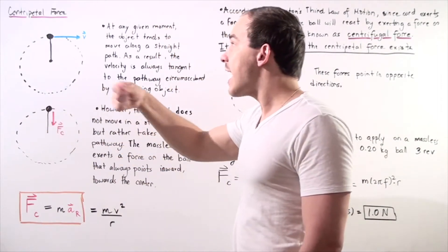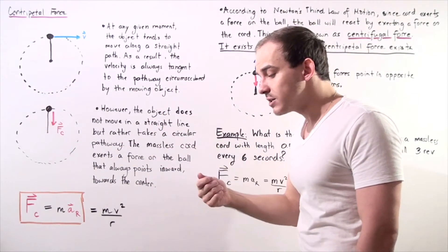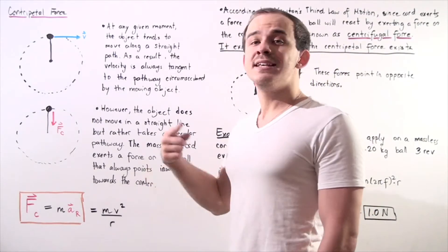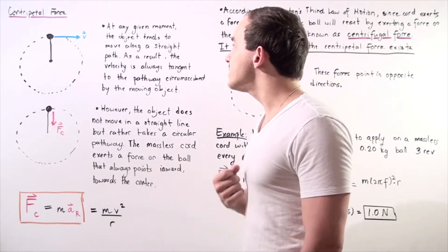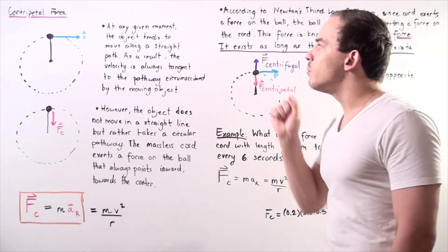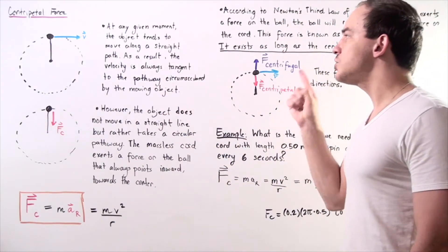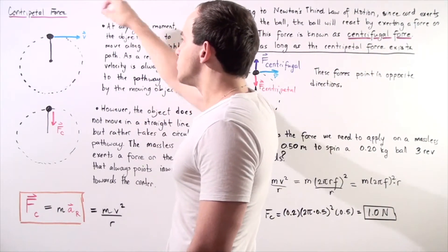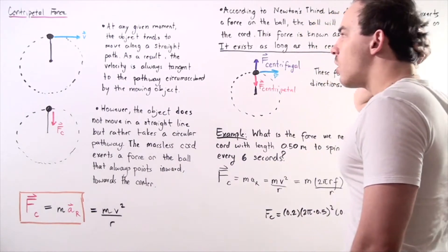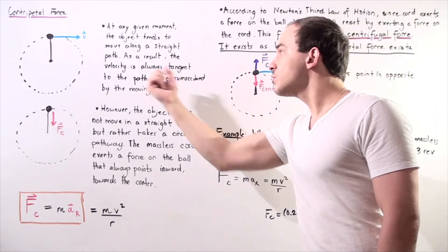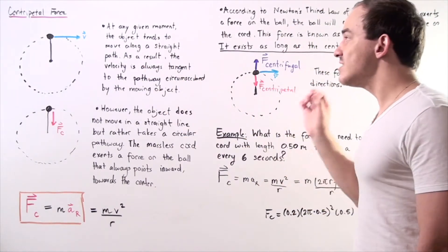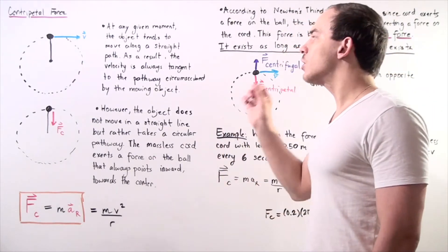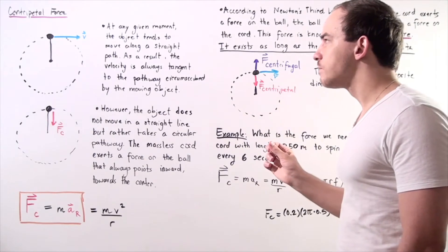As we spin our object, the velocity vector is continually changing direction, and that means it is continually accelerating. At any given moment in time, the object tends to move along a straight path — for example, at this point, it tends to move in the positive direction along the x-axis. As a result, the velocity is always tangent to the pathway circumscribed by our moving object.